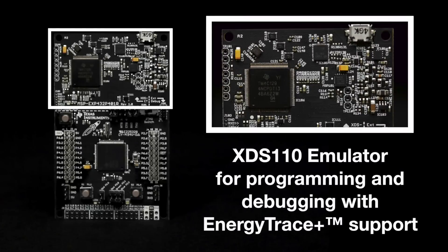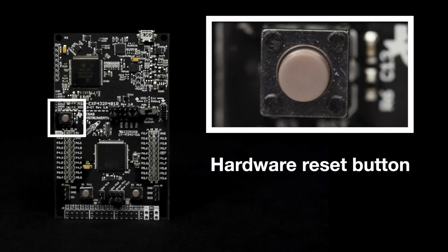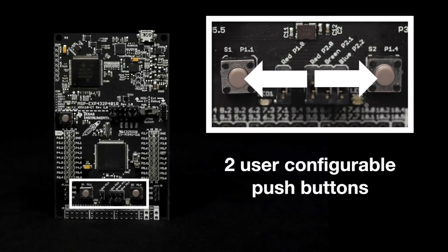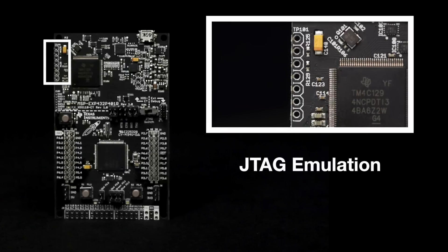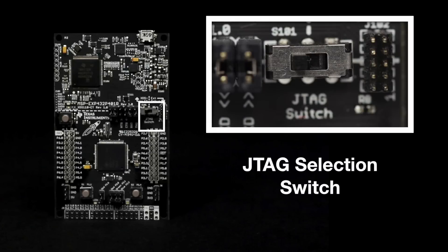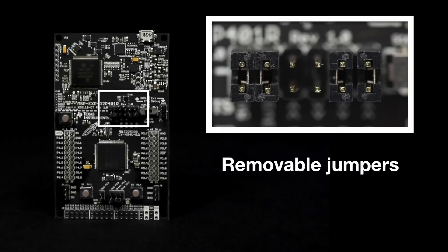The board includes the XDS110 emulator for programming and debugging with EnergyTrace support for real-time current measurement on an MSP432 microcontroller, a USB Micro-B connector, a hardware reset button, 2 user-configurable push buttons, 2 user-configurable LEDs, JTAG emulation, a JTAG selection switch, a connection grid for additional device pin access, and removable jumpers to separate the debugger circuit from the main processor circuit.